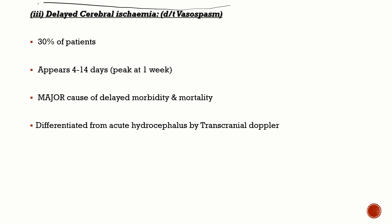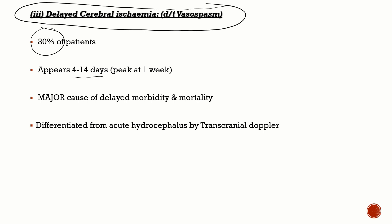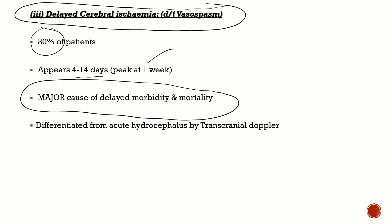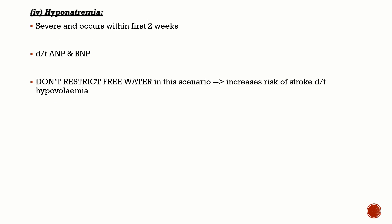Delayed cerebral ischemia due to vasospasm is one of the most important delayed neurological deficits. Subarachnoid blood irritates the vessel wall, causing severe vasospasm, leading to focal neurological deficits depending on the vessel involved. It occurs in 30% of patients, usually appearing on day 4 to day 14, peaking at one week — a major cause of delayed morbidity and mortality. Transcranial Doppler is used to differentiate delayed cerebral ischemia from acute hydrocephalus, both of which can present with altered sensorium.